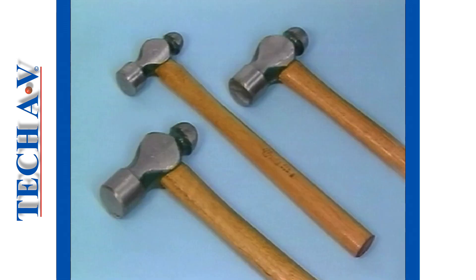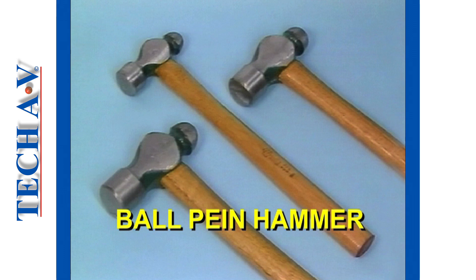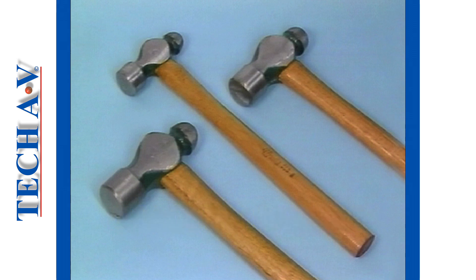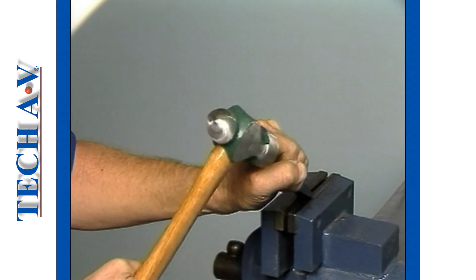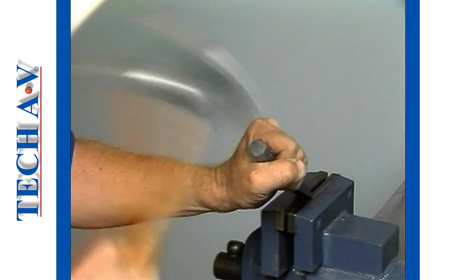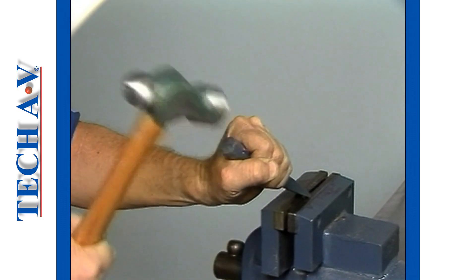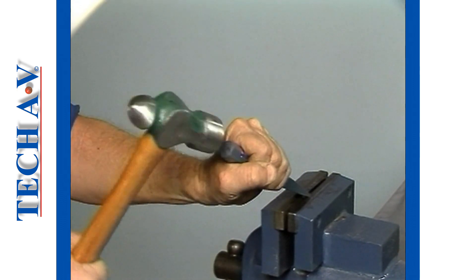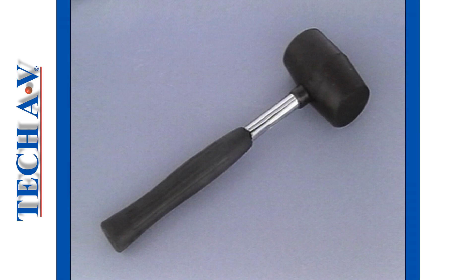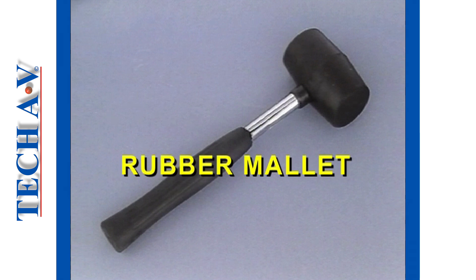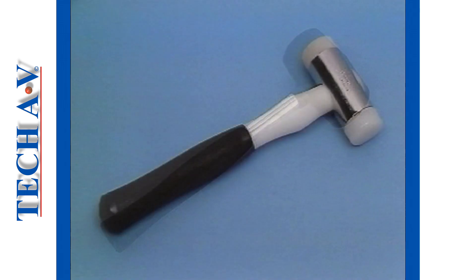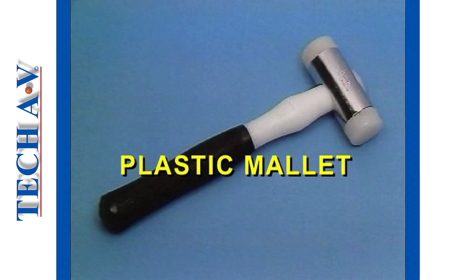This well-known tool has been around for many years. It is the ball-peen hammer, and is one of many hand tools in the hitting or striking tool group. Other striking tools include rubber mallets and plastic mallets.